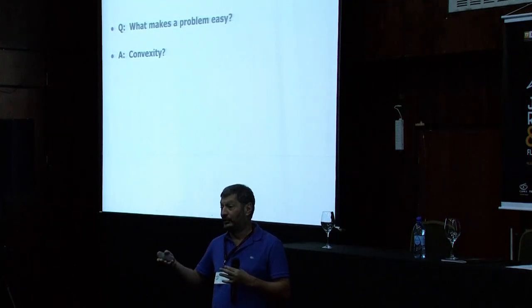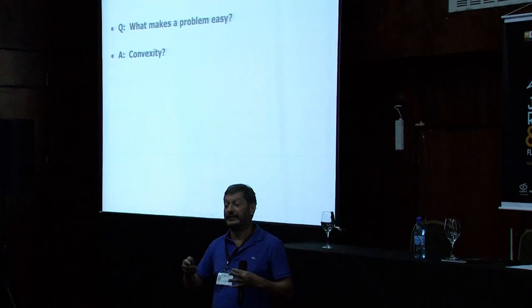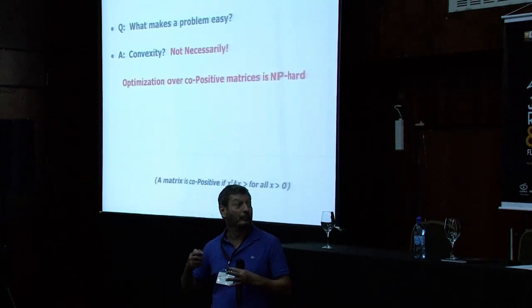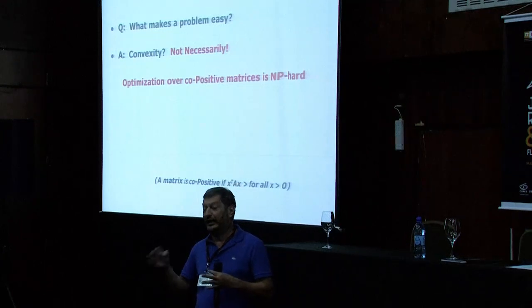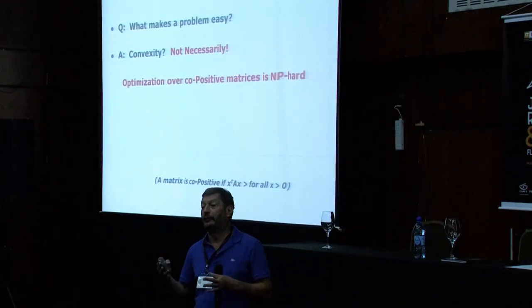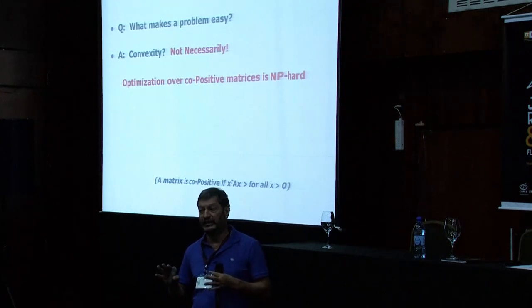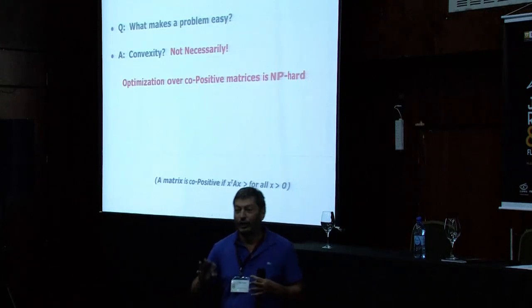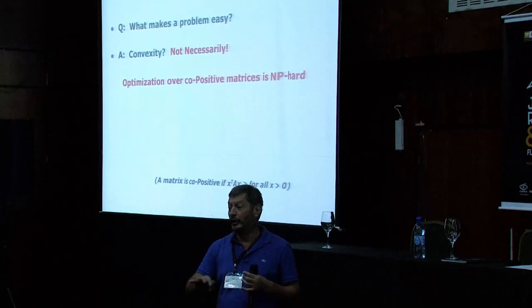So convex is good, right? Not truly the case. Many people don't know that you could have a problem that's convex and NP-hard — NP-hard meaning that unless P equals NP, you're not going to find a polynomial-time algorithm. Any problem that involves optimization over the set of copositive matrices is NP-hard. You cannot just say convex is easy. There are convex problems that are fundamentally hard.